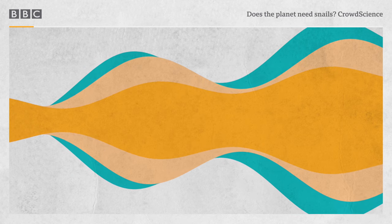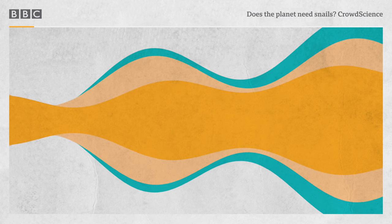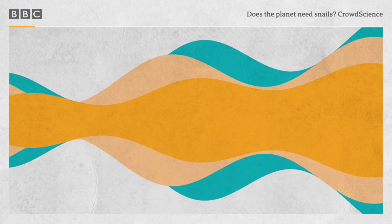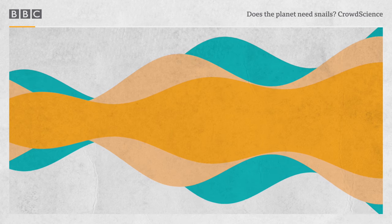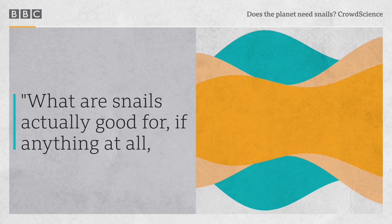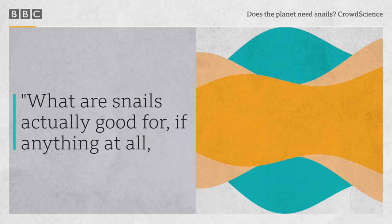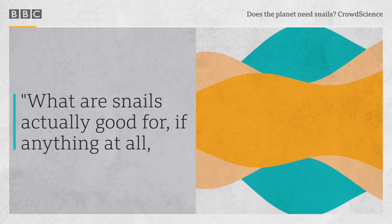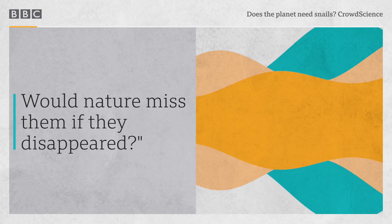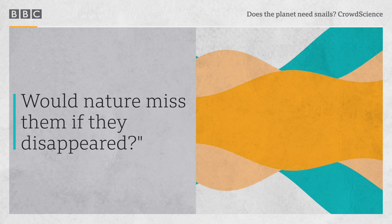I have a question about snails. I've been trying to figure out how to get rid of them, if there was any predator I could have in my garden. But I haven't seen anything that seemed to be effective. So I've wondered, what are snails actually good for, if anything at all, in nature, in the environment? Would nature miss them if they disappeared?